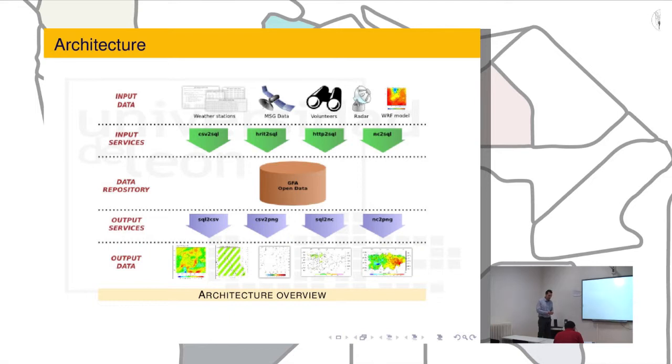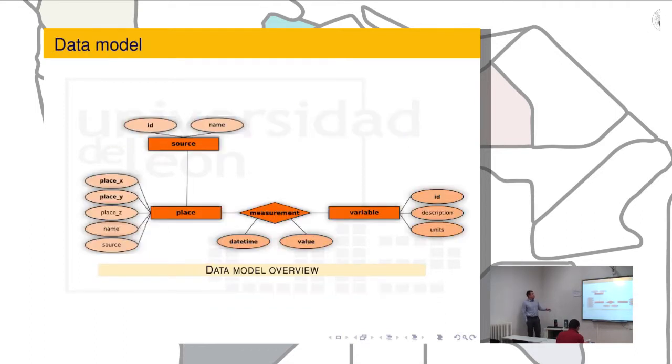We are working just in Castilla y León. And the third source of information, we have the information that the GFA group produced because they have some observation systems such as Meteosat receptor for example, a hail sensor network, and things like that. The first problem we have to deal with is to convert that information into something that we could store in a relational database.